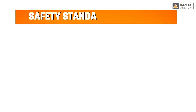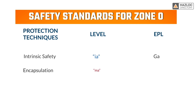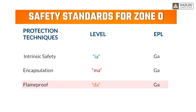In order to be certified as compliant with safety standards for Zone 0, the product must be protected by one or more of the following protection techniques: intrinsic safety with the level of protection IA, encapsulation with MA protection, and flameproof with DA protection. Note that this flameproof protection applies only to portable combustible gas detectors with catalytic sensor.